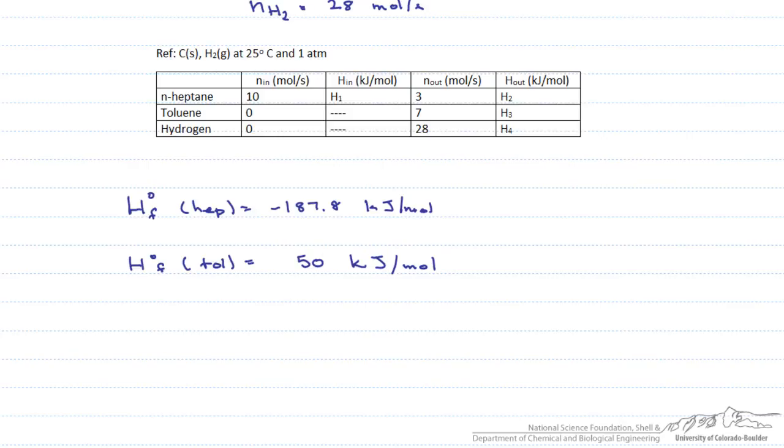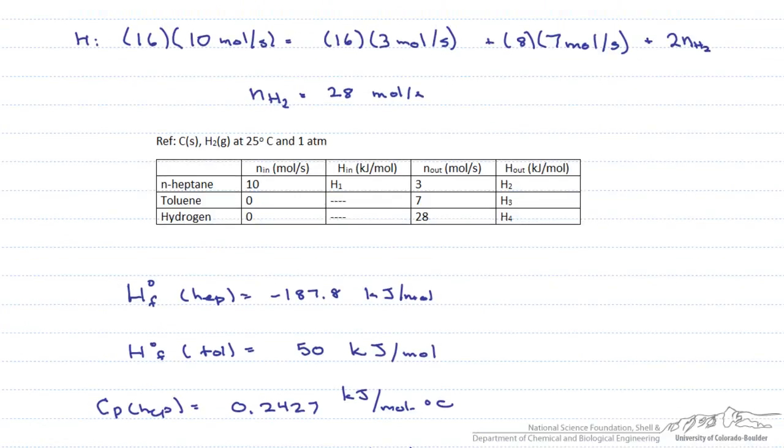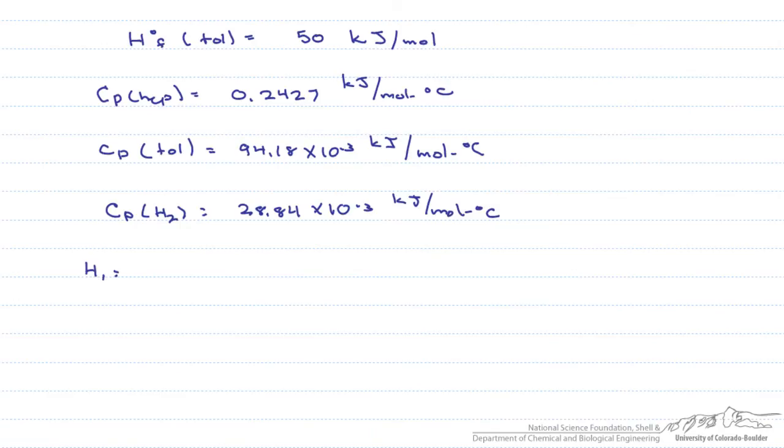We are also going to need the heat capacities. Note that I have truncated each heat capacity after the first term to simplify the calculation. First, we calculate H1. Our H1 equals the heat of formation of heptane plus the sensible heat, the integral from the reference temperature to 400 degrees C of the heat capacity. So our H1 equals minus 96.8 kilojoules per mole.